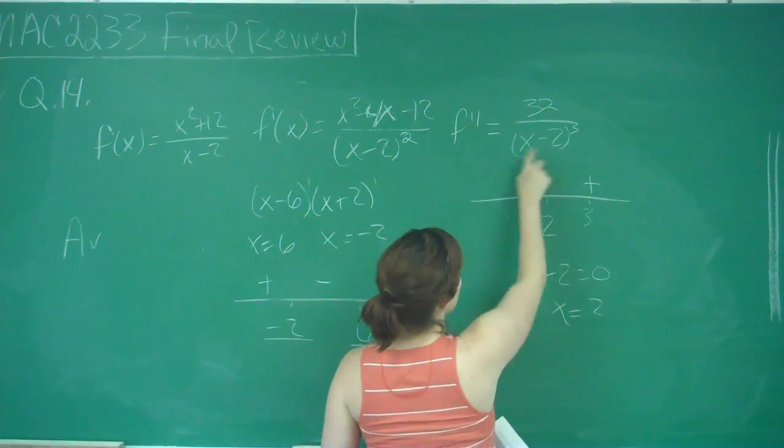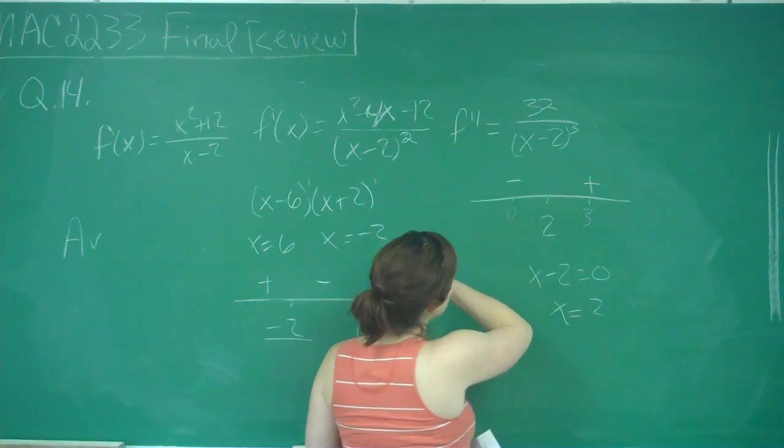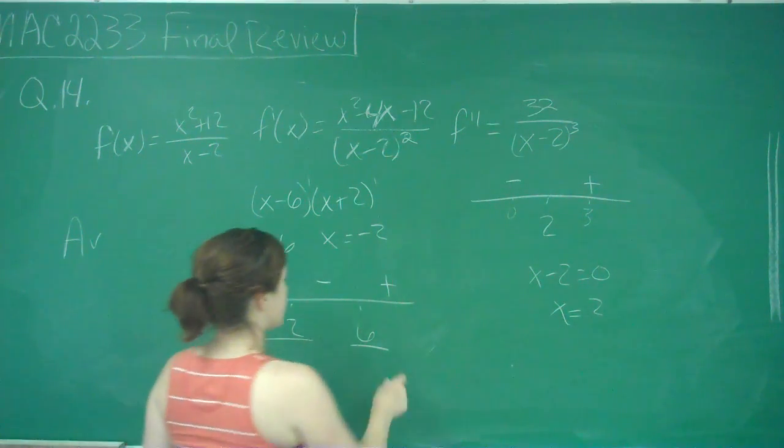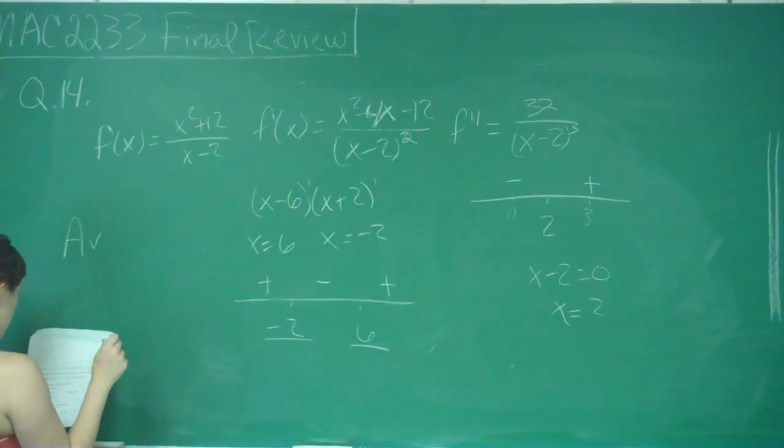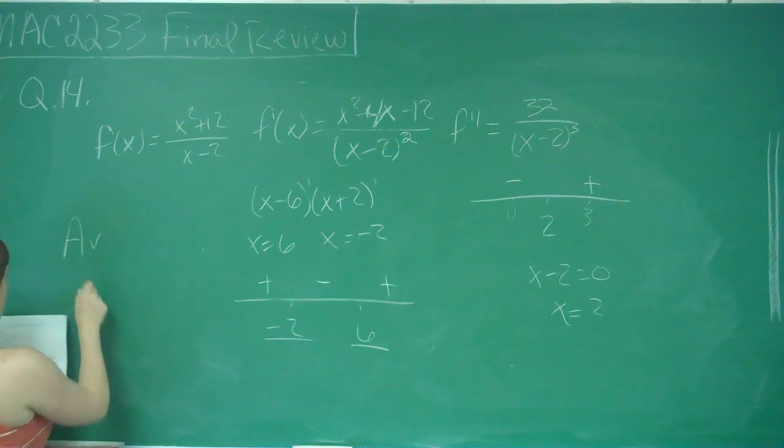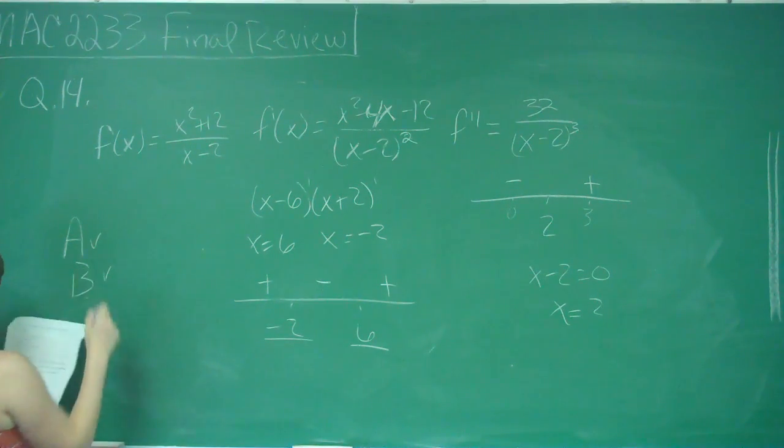And if I plug in 0, I get negative. So at 3, or at 6 to infinity, it is both concave up and increasing. So B is also okay.